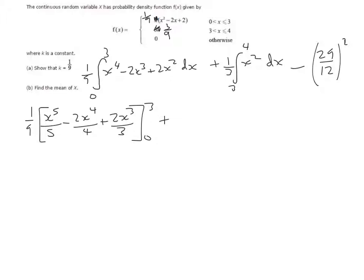And that's between 3 and 4. Then we're going to take away 29 over 12, which is the mean, all squared.